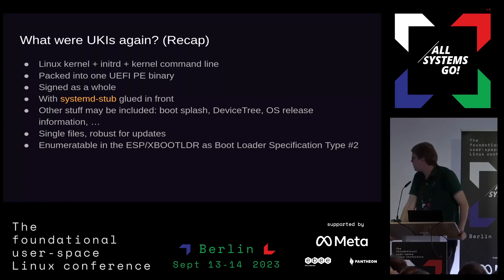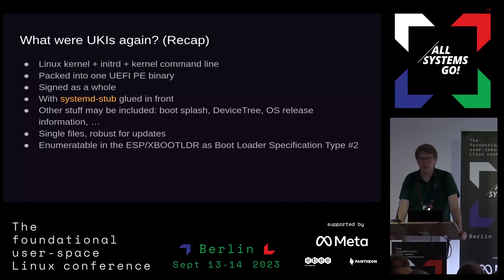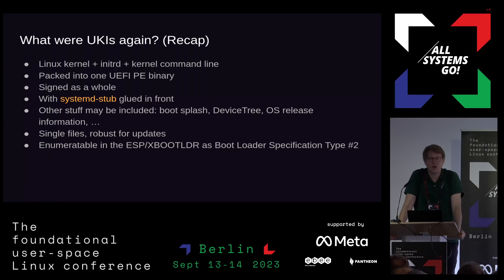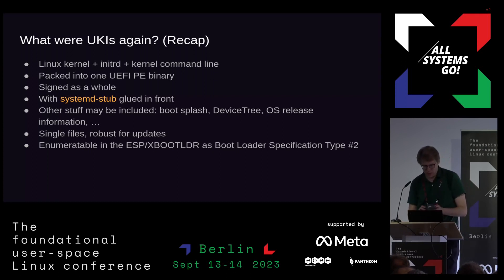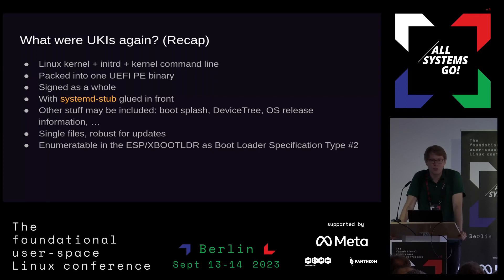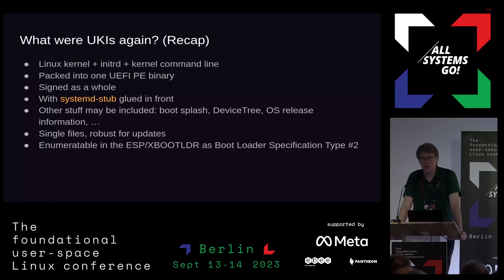These UKIs are enumerable, basically, because there's an accompanying specification — the bootloader specification — which basically says: in the ESP there's one directory, and if you put UKIs there, that's enough to make them show up on compatible boot menu implementations like systemd-boot. Because these images carry information about what they are — they're self-contained — you just drop something into the directory and the boot menu can find it, figure out what it is, which version it is, order it against other versions, show it nicely in the boot menu, and even automatically boot the newest thing.